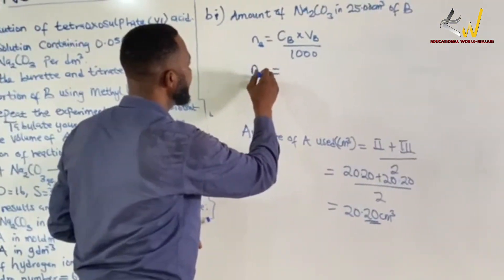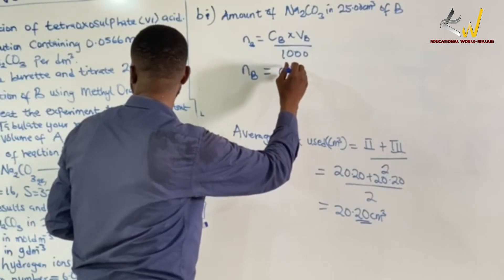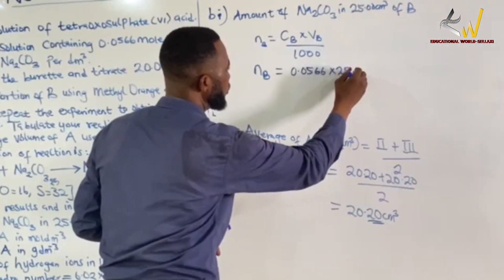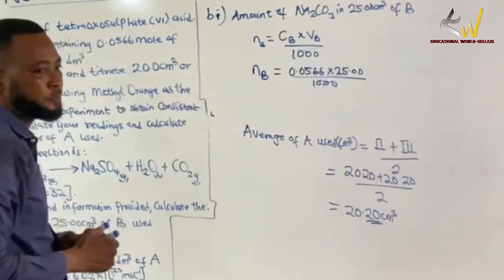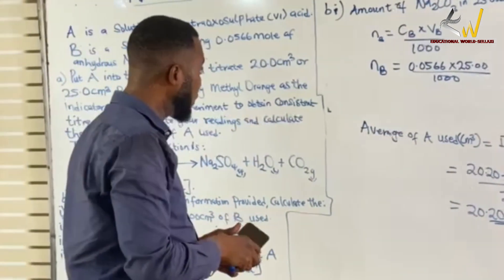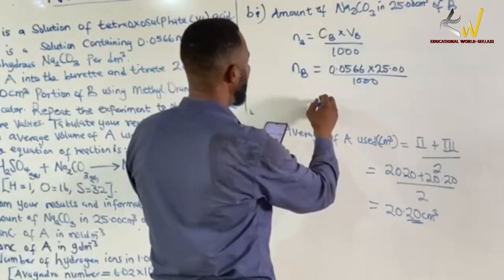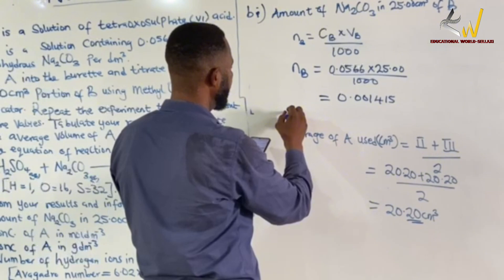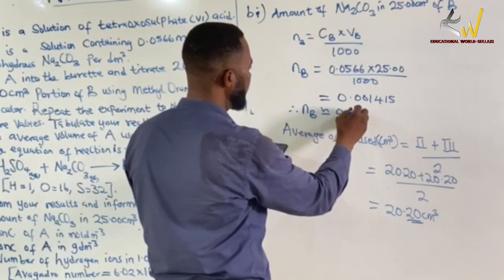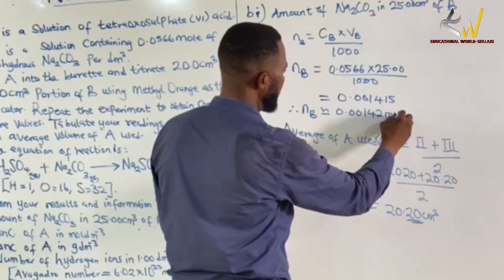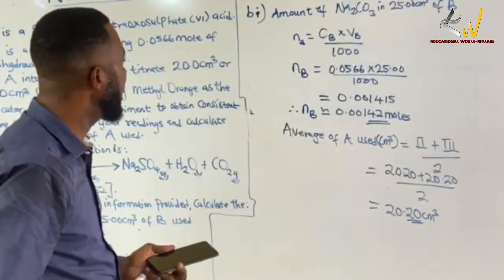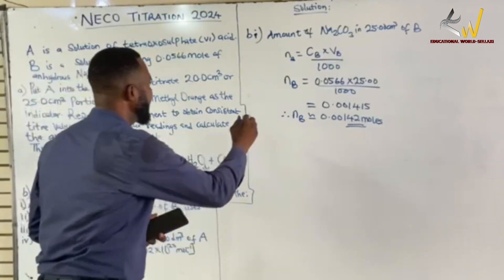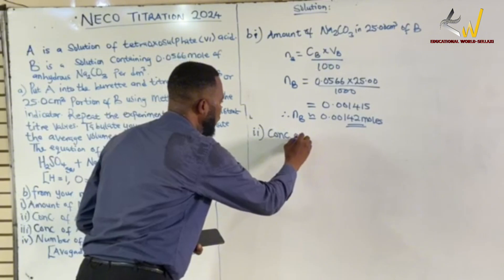So we have: moles of B = concentration × volume/1000 = 0.05 × 25.00/1000 = 0.00125 moles. That is the amount of sodium carbonate in 25.00 cm³ of solution B.